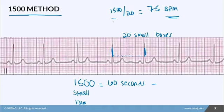Just like the other two methods, if a patient has an irregular heart rhythm it becomes more difficult, because the number of boxes between each QRS will vary — it might be 20, then 23, then 30 — so you'll come up with different numbers every time. If your patient has an irregular rhythm, how do you calculate the heart rate?